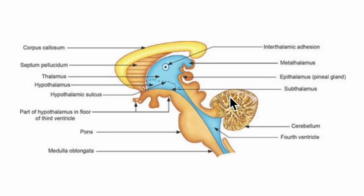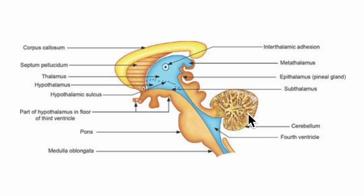the pons, the medulla, and here is the cerebellum. After having an understanding of the orientation of these structures, let's look at another diagram in order to learn about the position or the location of the structures of the diencephalon.